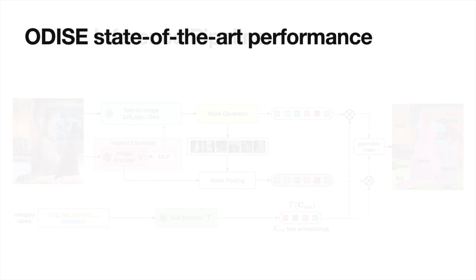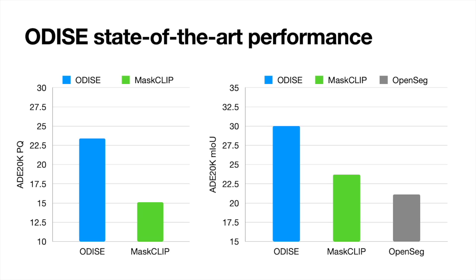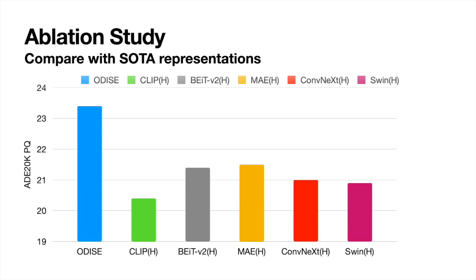Here we show some experimental results. We train the Odyssey model with the COCO dataset's mask and label or caption supervision and evaluate on the ADE20K dataset. Odyssey surpasses prior works — MaskCLIP and OpenSeg — by a large margin, and achieves state-of-the-art performance on both open vocabulary panoptic and semantic segmentation tasks. We also compare Odyssey with other state-of-the-art visual representations, and the diffusion features of Odyssey show significant advantage over the other representations.